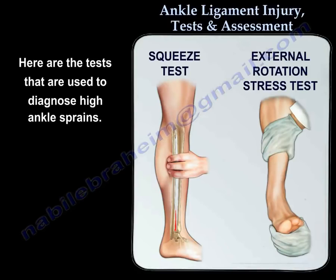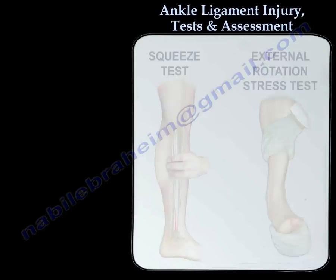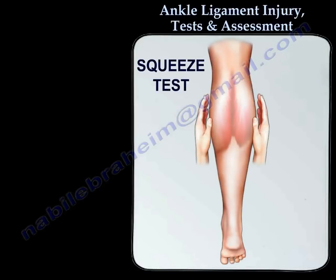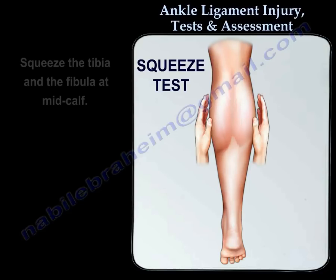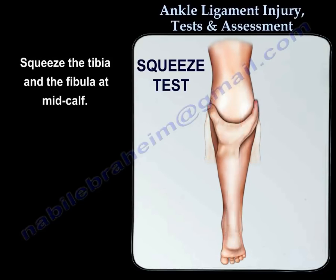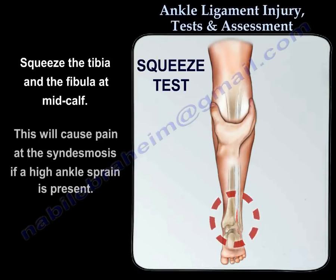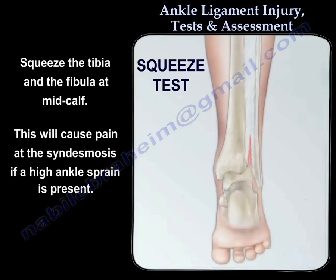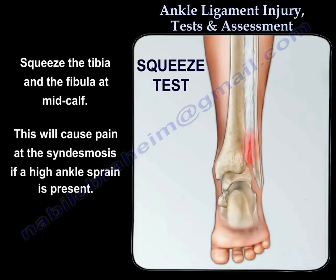Here are the tests that are used to diagnose high ankle sprain: the squeeze test and the external rotation stress test. To perform the squeeze test, squeeze the tibia and the fibula at mid calf. It will cause pain at the syndesmosis if a high ankle sprain is present.